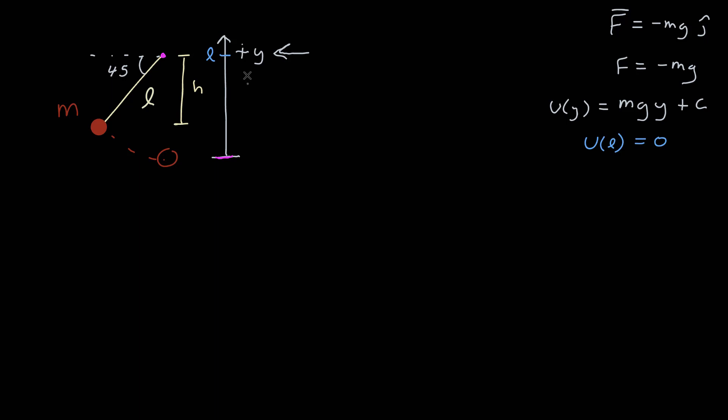So u evaluated at the y coordinate l is equal to zero. So I need to plug that into my expression here, which says that mg evaluated at l plus c is equal to zero. That's the zero of potential energy. That allows me to solve for the constant, which is negative mg times l. So I put that back into my expression, and my potential energy is now mg y minus mg l. Let's factor out an mg. And this is my final potential energy as a function of y.